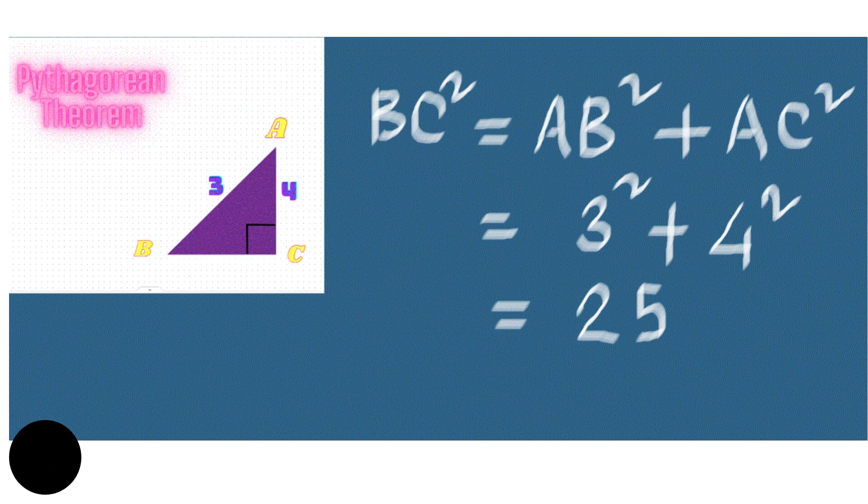The relation first proved rigorously by Pythagoras, a Greek philosopher and geometrician, was known in practice long before his time. It was in fact used by the ancient Egyptians for the construction of right angles.